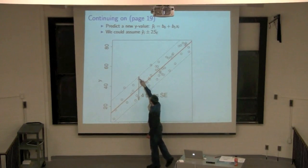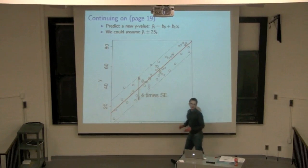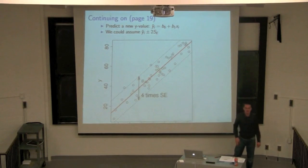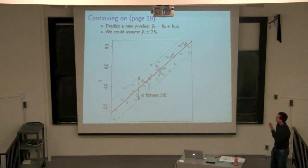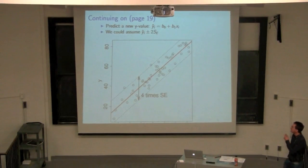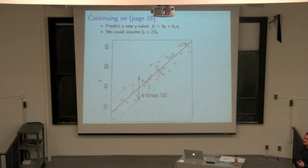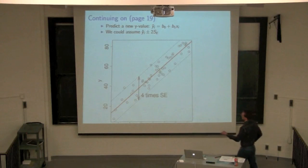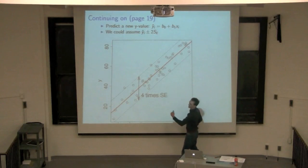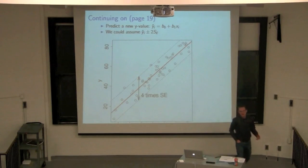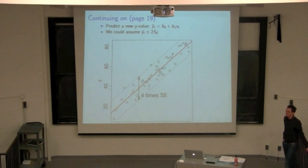Up two standard errors or down two standard errors captures the region of variance. With 50 data points at 95% confidence, we'd expect five out of 100 — about 2.5 out of 50 — to lie outside the limits. There are about 1-2 data points beyond those lines in this example, so it makes sense.